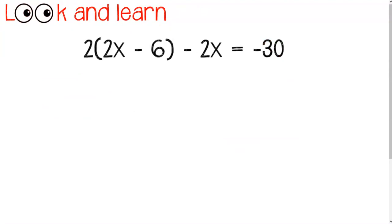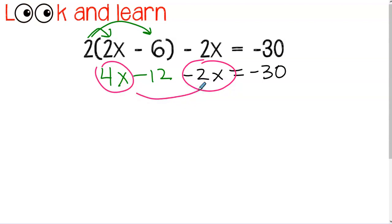Let's try looking at a problem that uses both of these properties. So I'm going to distribute first. And that gives me 4x minus 12. The rest of the problem I'm going to rewrite. And now I'm going to do the second part, which is combining like terms. In this case, I'm going to combine the variable terms. Now I'm going to use my inverse operations.